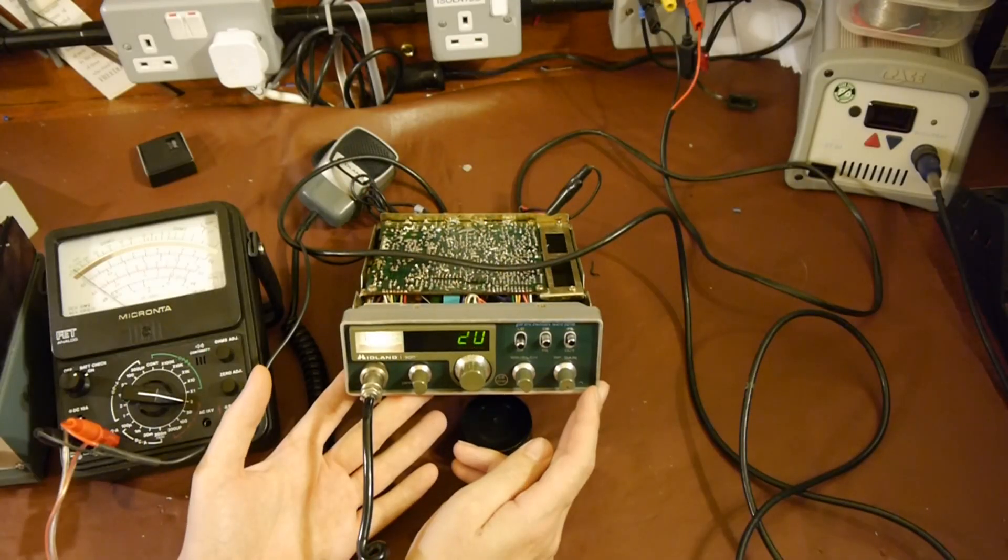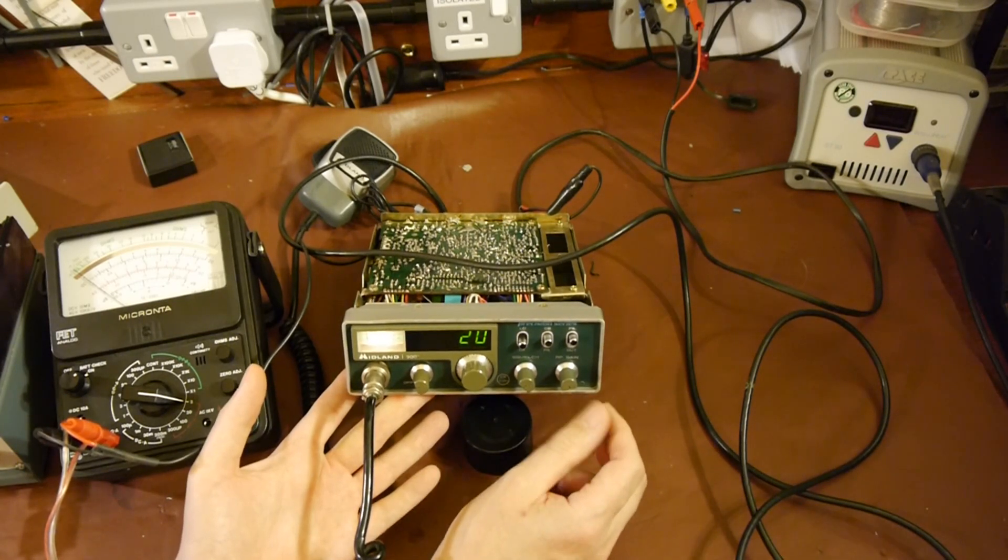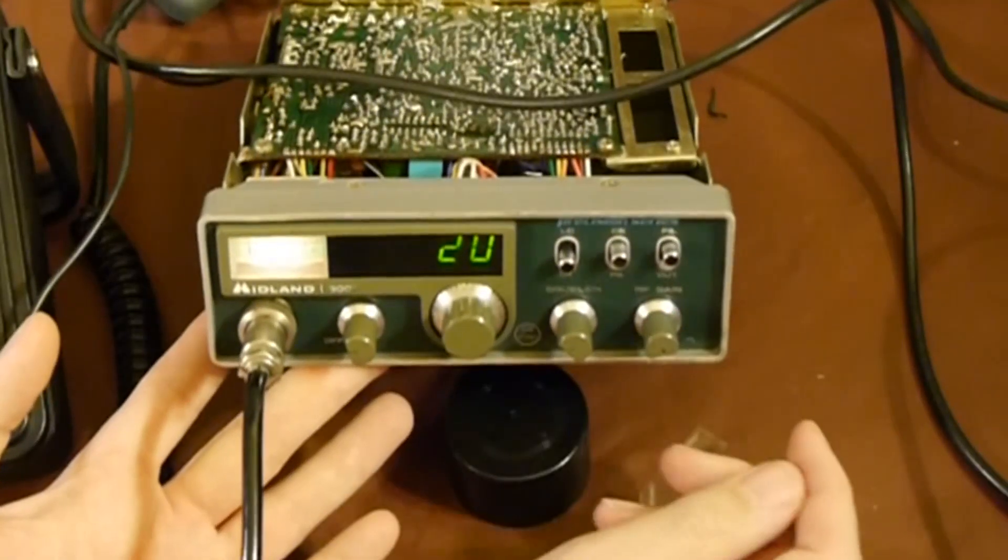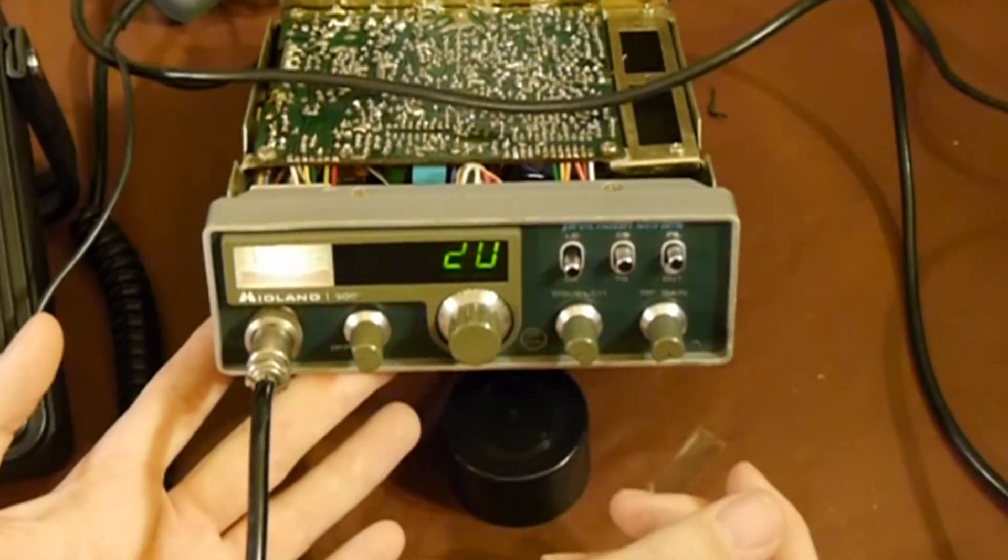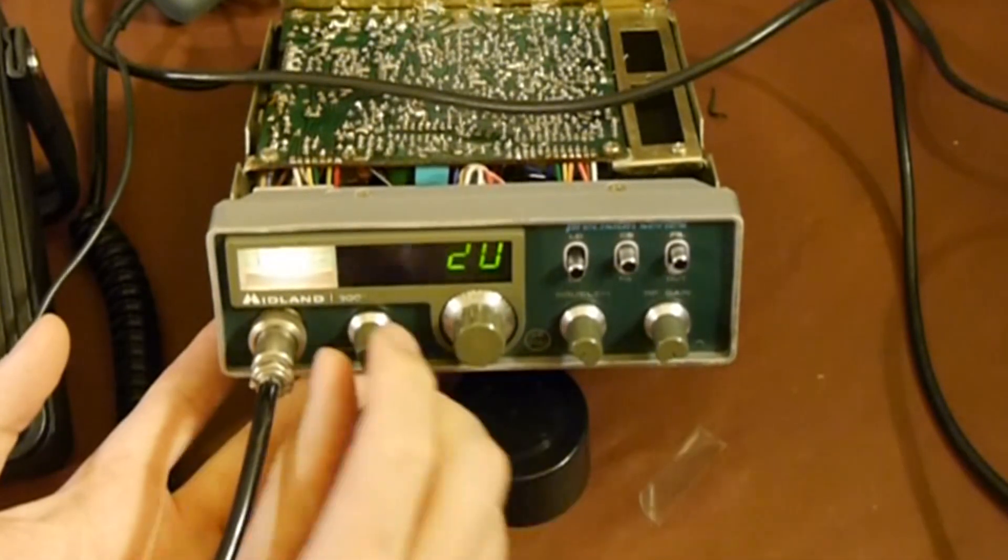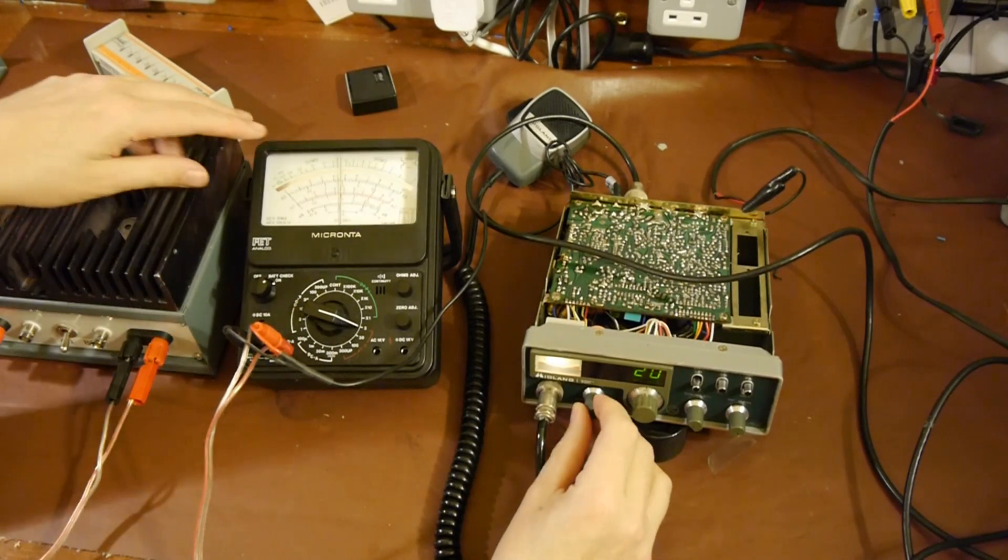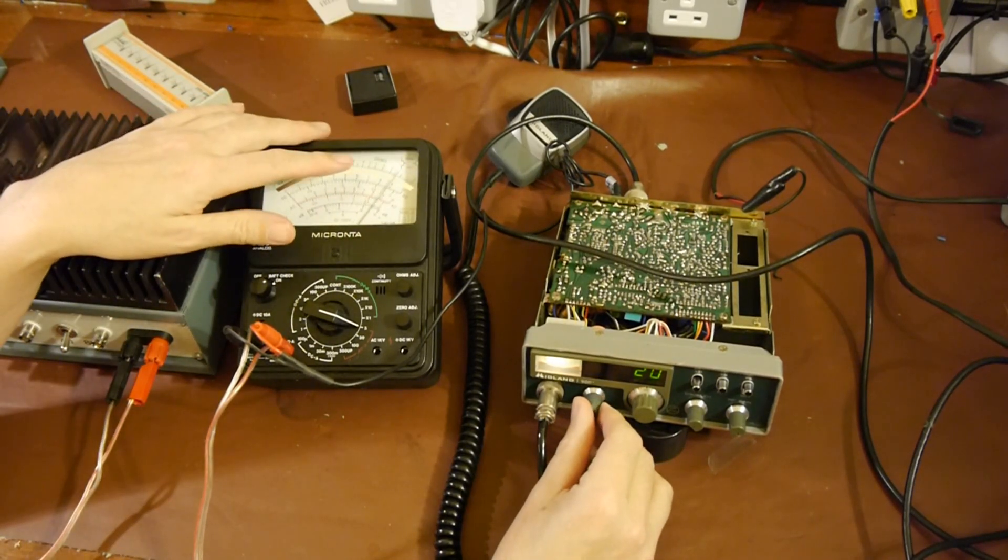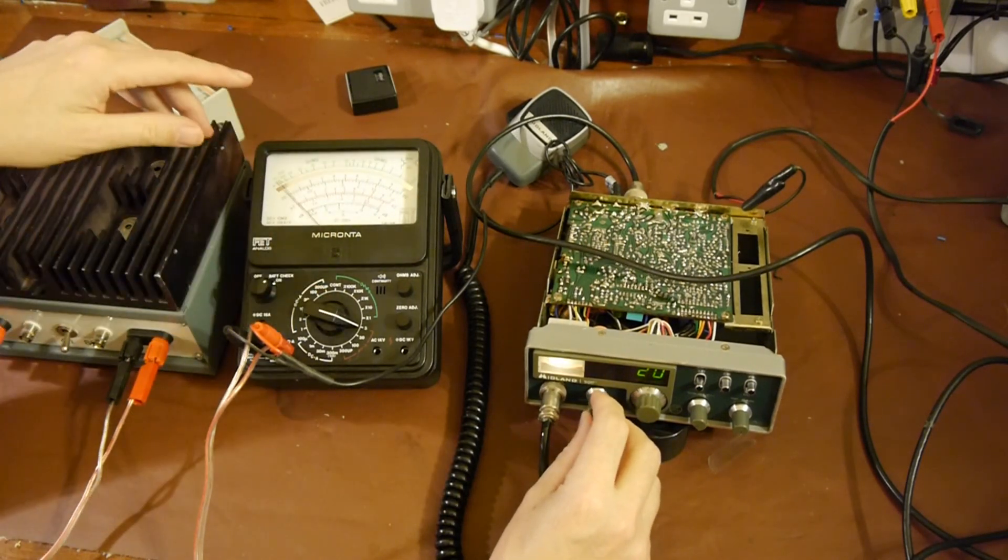So the output from our signal generator, it connects into the back of our transceiver just on the antenna socket. So here's our signal generator connection to the RF input of the transceiver. Now the settings on your transceiver may vary from this one, but typically what you want to do if the transceiver's got RF gain, you want to turn the RF gain right up to maximum. You want to turn the squelch right down so we are getting an output from the speaker. And then this is a volume control. So if you see that I'm turning the volume control up, if I turn it up, the voltage reading goes up. If I turn it down, it comes back down again.